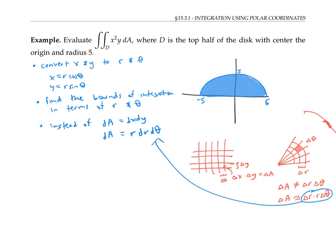Now that we've outlined the setup, let's go ahead and compute this integral. First, we'll convert the x squared y that we're integrating into polar coordinates. So x is r cosine theta, and y is r sine theta. So that simplifies to r cubed cosine squared theta sine theta.